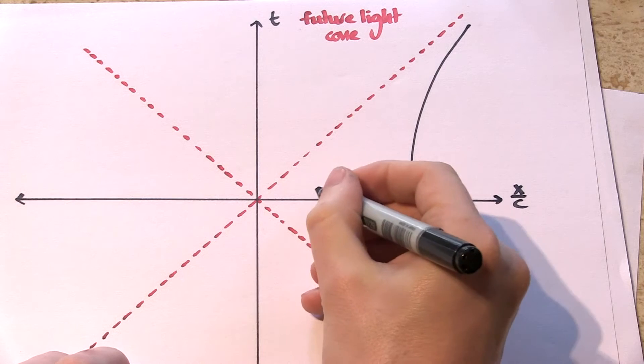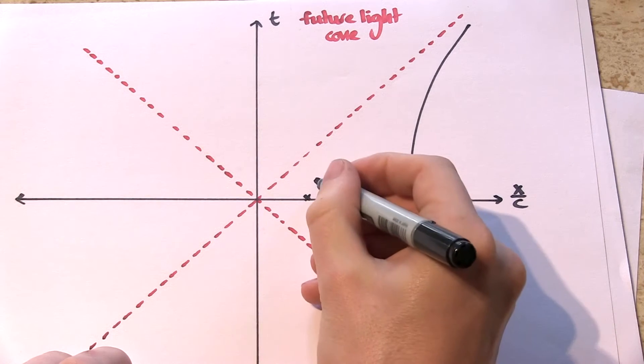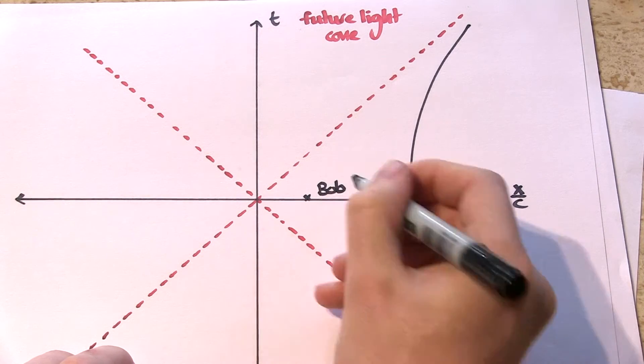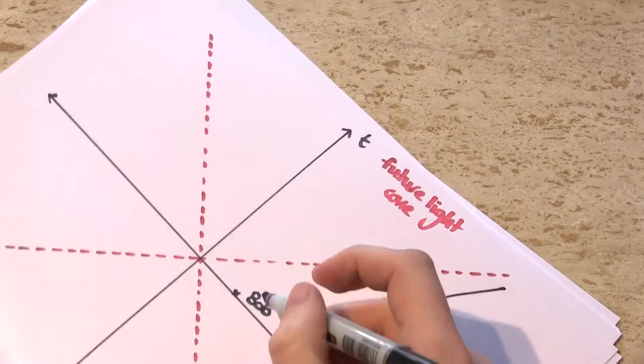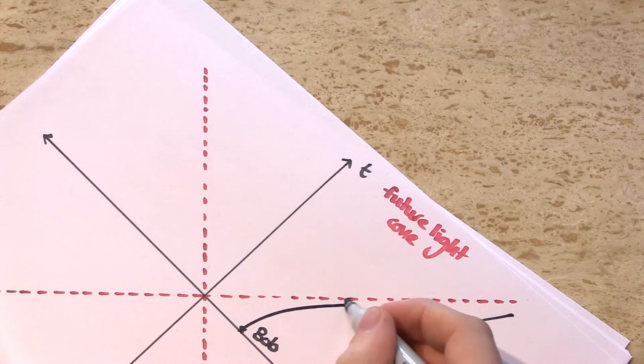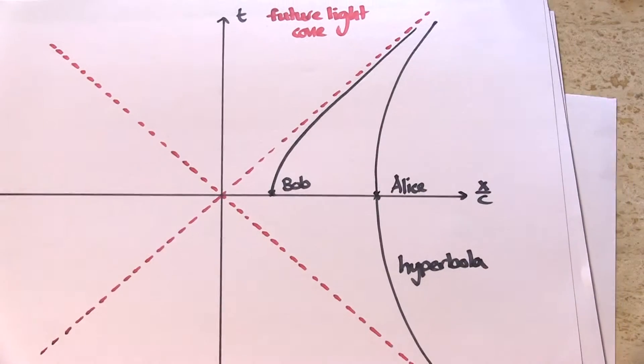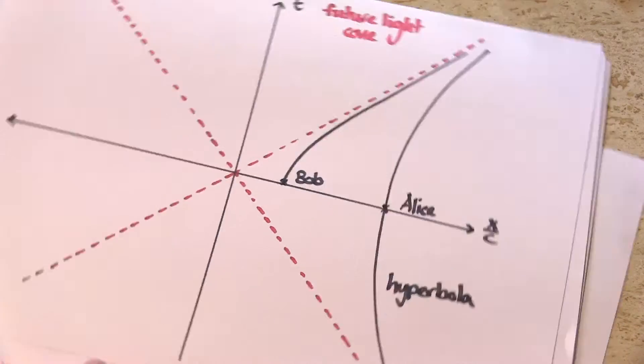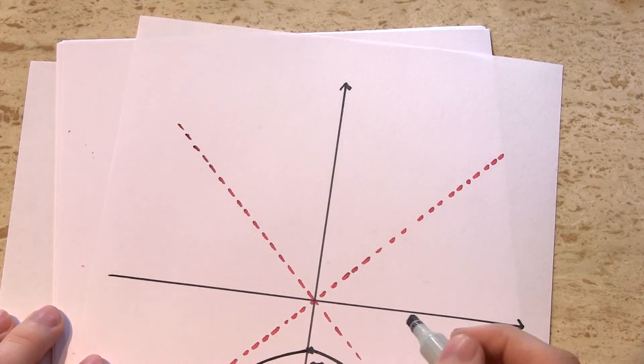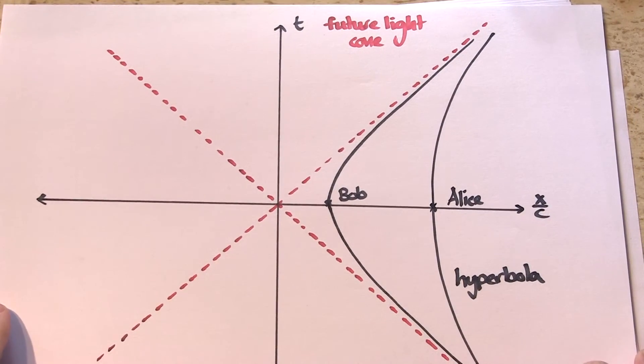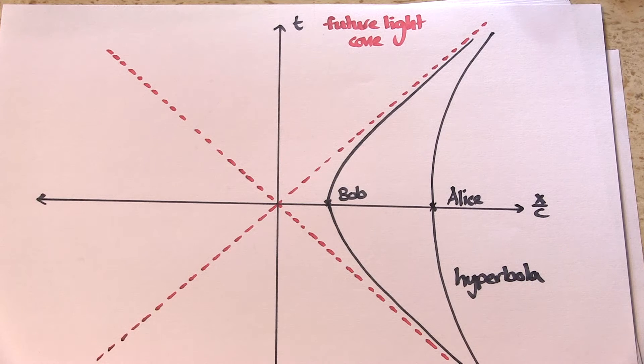Alice has not only decided on avoiding me entirely, but she's also convinced Bob to do the same. Bob starts off closer to me than Alice and so to avoid entering my future light cone, he's going to have to accelerate even harder than Alice did. His path is also a hyperbola, but because he's accelerating more, his hyperbola is sharper than Alice's.